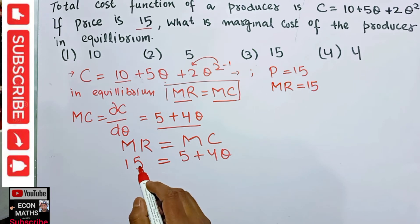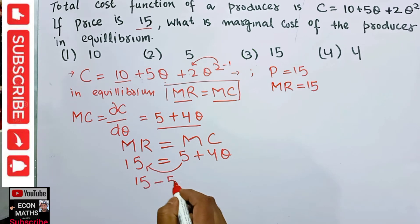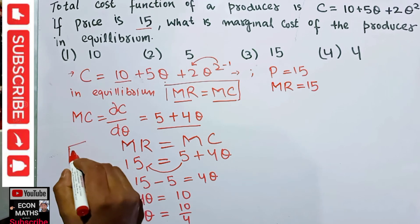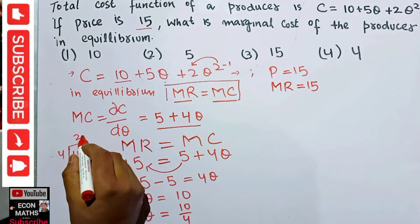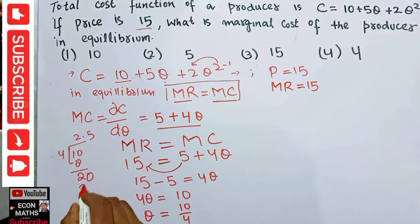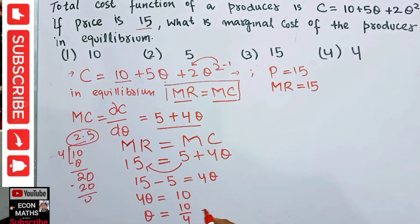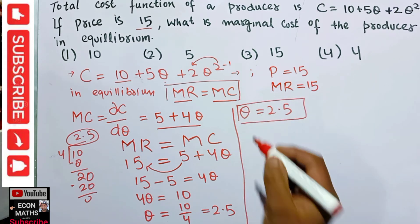Transposing 5 to the left-hand side: 15 − 5 = 4q, which gives 10 = 4q, so q = 10/4 = 2.5. We have found the equilibrium quantity is q = 2.5.